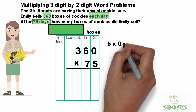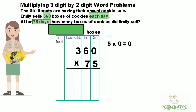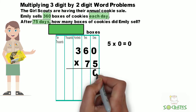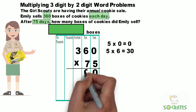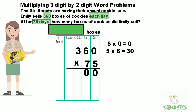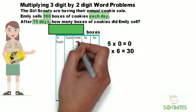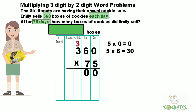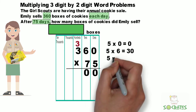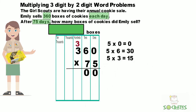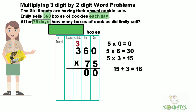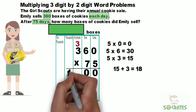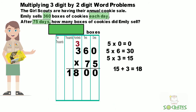First we start with the ones. Five times zero equals zero. Next, five times six equals 30 — we put a zero down and carry the three above the three in the hundreds place. Next, five times three equals 15, and then we add the other three to the 15 for a total of 18. So 1,800 is what we got for the ones.